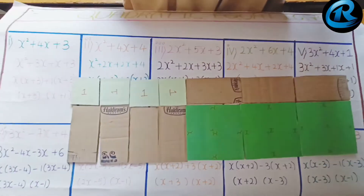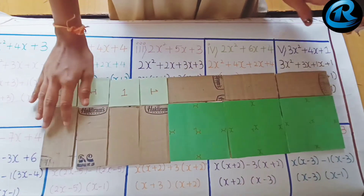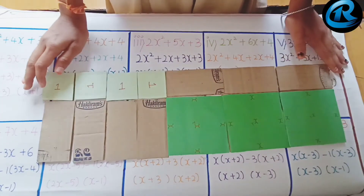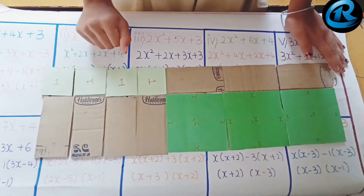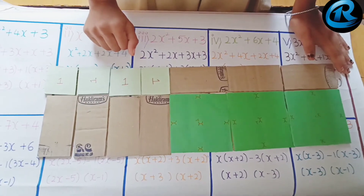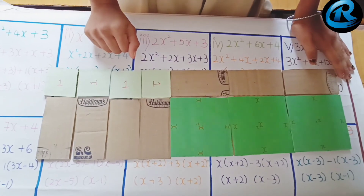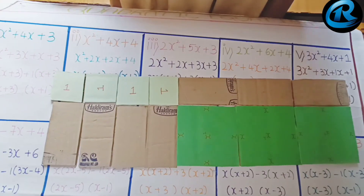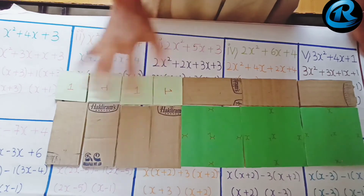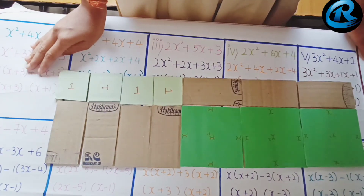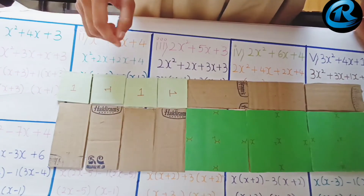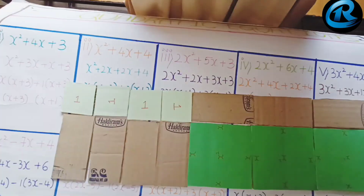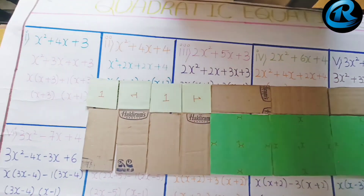At last, we can conclude that when the shape comes to a rectangle, we can find two zeros. When the shape comes to a square, we can find only one zero. When we can't get a proper or perfect shape, it means the equation does not have any zeros. Thank you all for visiting this.